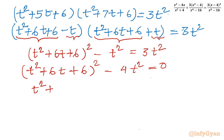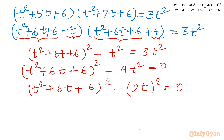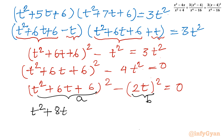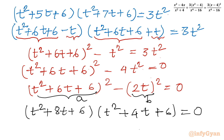Applying the difference of two squares again: (t² + 6t + 6 + 2t)(t² + 6t + 6 - 2t) = 0. This gives (t² + 8t + 6)(t² + 4t + 6) = 0. Factorization is done. Now we set each bracket equal to zero.